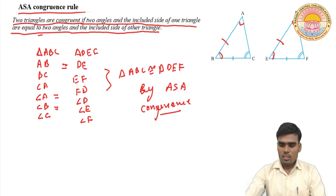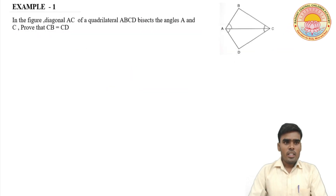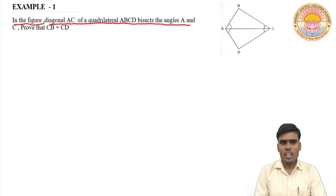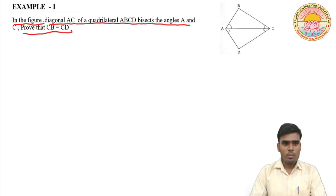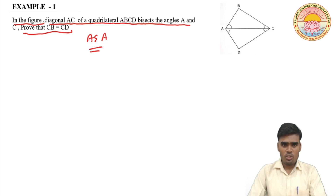Now, the example based on the ASA congruence rule: In the figure, diagonal AC of the quadrilateral ABCD bisects angle A and angle C. Prove that CB is equal to CD. ये example ASA congruence rule पर based है, तो कैसे हम इसको solve करते हैं, इसका solution कैसे find करते हैं ASA congruence rule से — आप इसको ध्यान से देखिए।